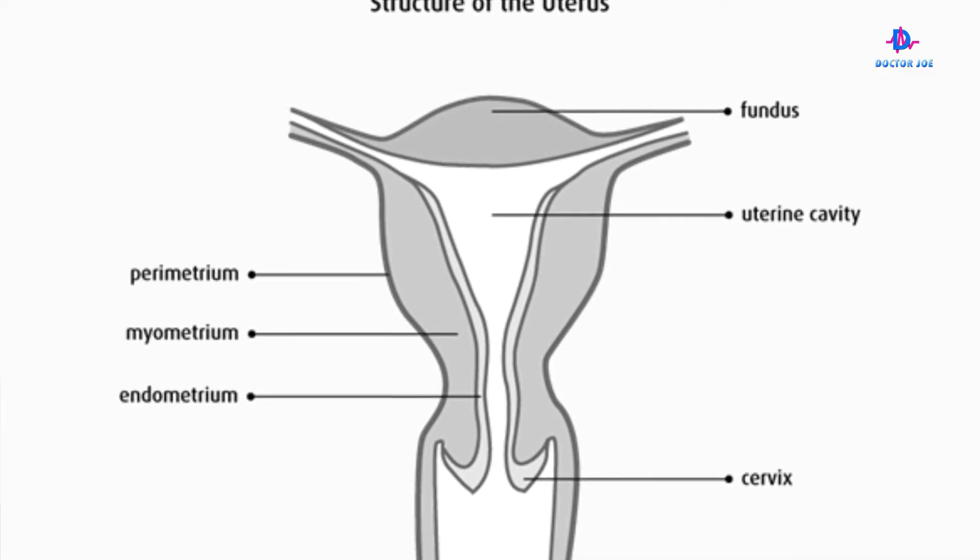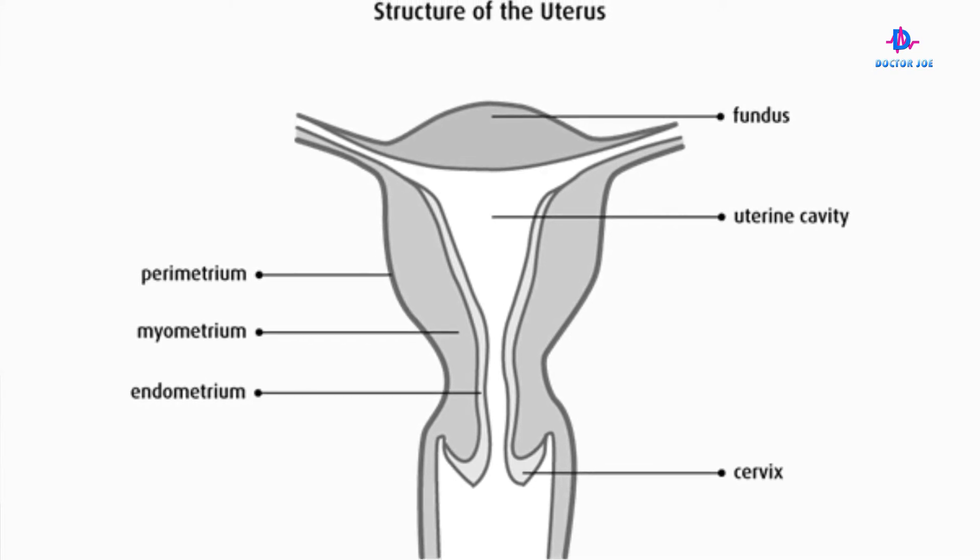These fibroids can cause different symptoms. But one of the questions we ask ourselves is: what are usually the risk factors for developing uterine fibroid? Well, the real cause for developing uterine fibroid has actually not been established — we don't know what actually causes them. But there's one thing that we know. Number one, some of the risk factors include race. Women of color or of African origin will have more risk of developing uterine fibroid than comparing to other races.